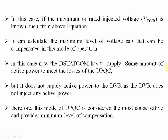In this case, the DSTATCOM has to supply some amount of active power to meet the losses of the UPQC. So the DSTATCOM will come into picture and supply some active power to compensate the UPQC losses. However, it does not supply active power to the DVR, so the DVR does not inject any active power. Therefore, this mode of UPQC is considered the most conservative and provides the minimum level of compensation.